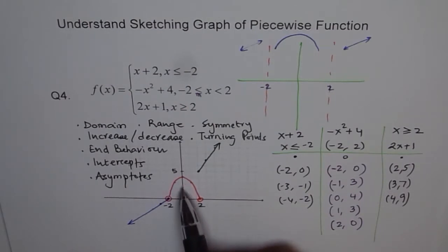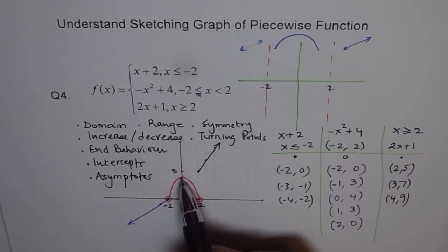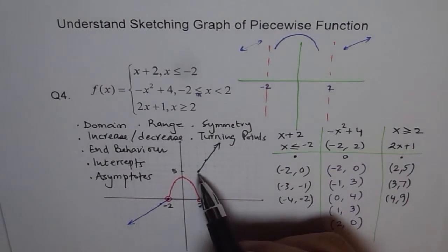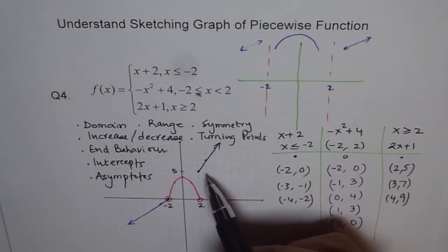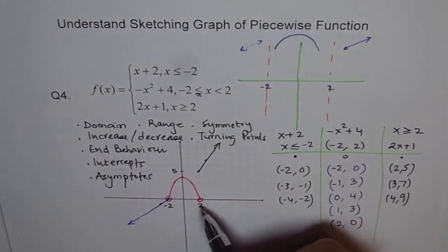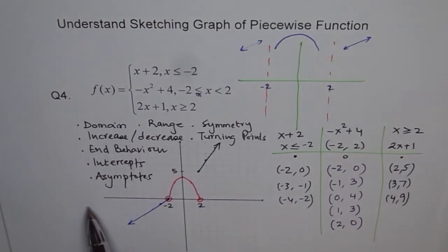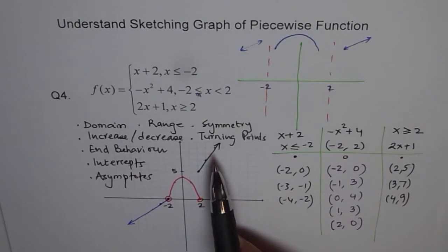This graph has a turning point at x equals 0. The function is increasing from minus infinity to 0. It decreases from 0 to 2. After x equals 2, including 2, it increases again. End behavior: as x approaches negative infinity, y approaches negative infinity; as x approaches positive infinity, y approaches positive infinity.